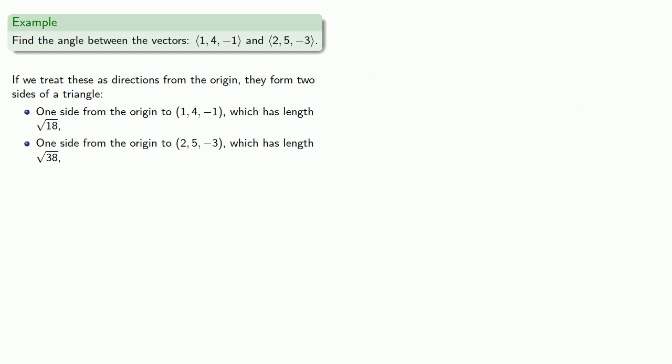Now we need the vector joining those two endpoints. That third side goes from (1,4,-1) to (2,5,-3).